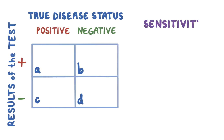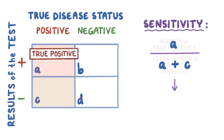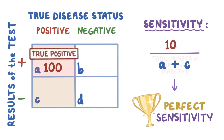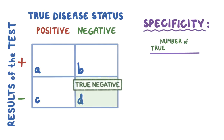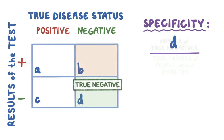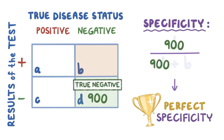To calculate sensitivity, we divide the number of true positives by the number of people who have diabetes — so cell A divided by the sum of cell A and cell C. To calculate specificity, we divide the number of true negatives by the total number of people who do not have diabetes — so cell D divided by the sum of cell D and cell B. A test with perfect specificity would have 900 true negatives in cell D, and zero false positives in cell B.